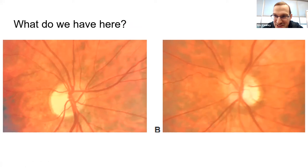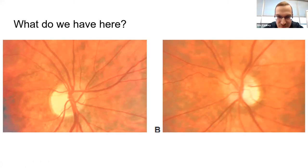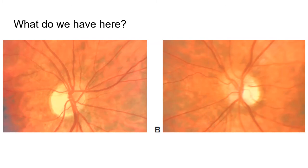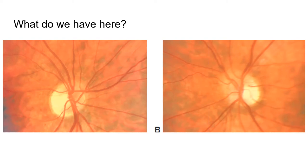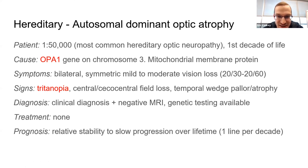Another case shows temporal pallor bilaterally on OCT. The diagnosis is autosomal dominant optic atrophy — the OPA1 gene, chromosome 3, also thought to have mitochondrial dysfunction. Remember this one has a blue-yellow color deficit, tritanopia. A typical stem is temporal pallor on a young kid who failed a vision screening exam.